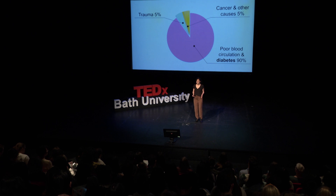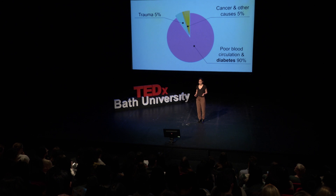I'm a biomedical engineer and I'm very interested in human movement, in particular in disabled populations. Amputees are a particular kind of disabled population because they need a prosthesis to be able to work and to do everyday life activities.